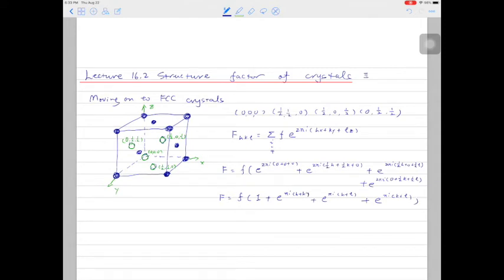If you do some simple calculations, you will find that if h, k, and l are mixed odd or even, the structure factor F will be equal to 0.